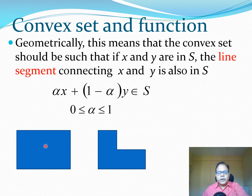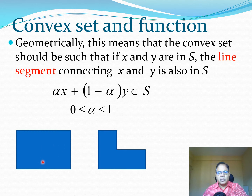For example, if we take a set which is a rectangle, and we take any two points within this set and draw a line connecting those two points, that line is also going to lie within this rectangle. So this is a convex set.